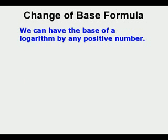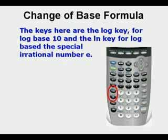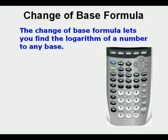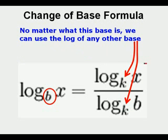We can have the base of a logarithm be any positive number. However, most calculators will have at most log keys with two bases: the log key for log base 10 and the ln key for log base e, the special irrational number. The change of base formula lets you find the logarithm of a number to any base. The rule is: log base b of x equals log base k of x divided by log base k of b, so no matter what the base is, we can use the log of any other base.